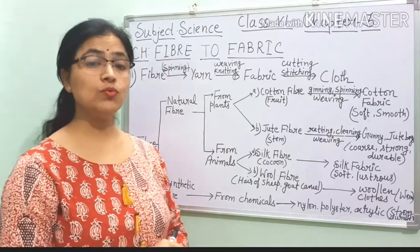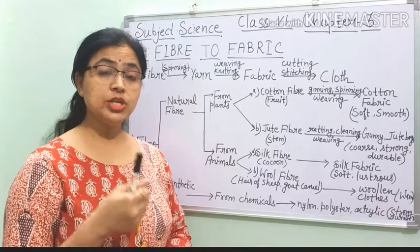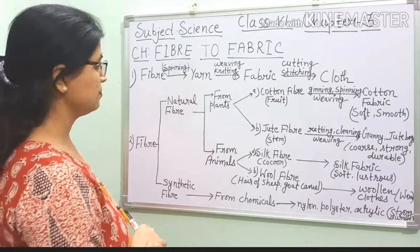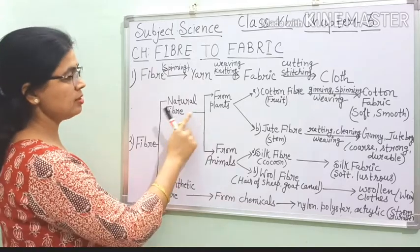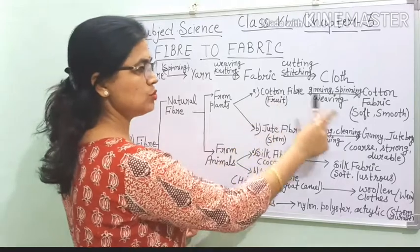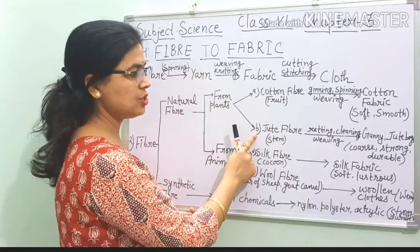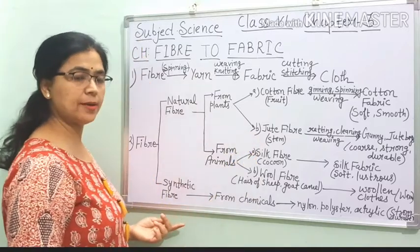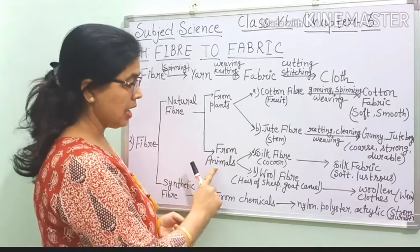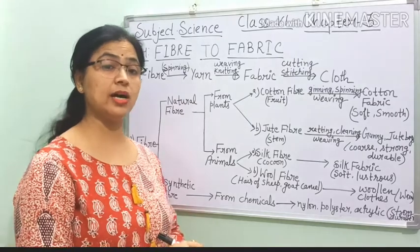Jute bags can take very heavy loads easily. So natural fibre from plants — cotton and jute we have done. Cotton we get from the fruit and jute we get from the stem. Now the second portion — that is animals.